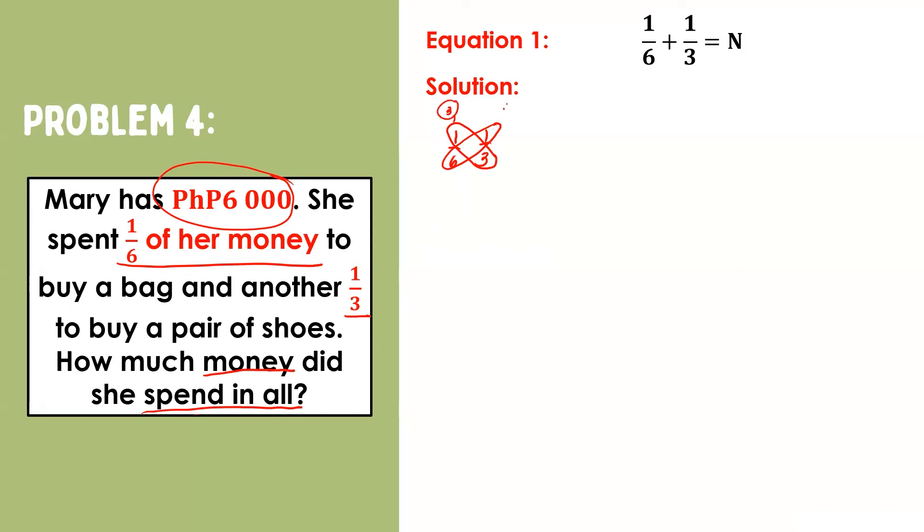Recall that we can only add fractions if they are similar. So let us change these fractions into similar fractions. Using the butterfly method, we will have three-eighteenths and six-eighteenths. Adding these two fractions, we'll have three plus six, that is nine. Copy the common denominator, eighteen.